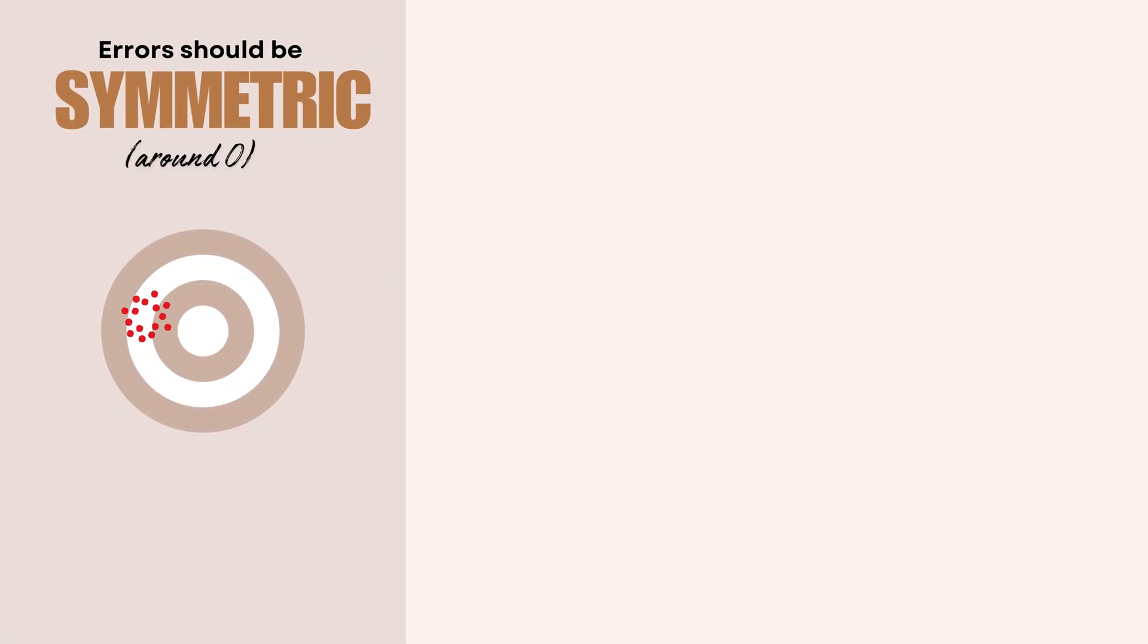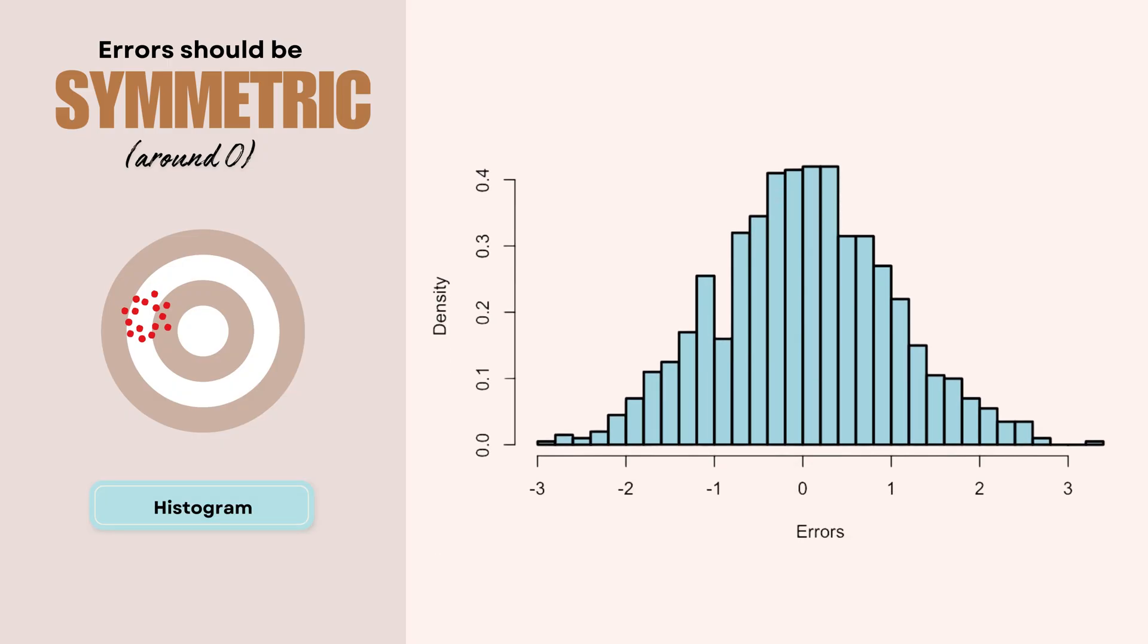The second thing is that our errors need to be symmetric. So are we equally likely to overpredict as we are to underpredict? Do the positive and negative errors balance out? And is the average error close to zero? And for this, we can use a simple histogram of plotting the errors. So the histogram tells us the distribution of our errors. The horizontal axis shows error values. Negative values means that we predicted too low. And positive values means that we predicted too high. Zero means a perfect prediction. The vertical axis shows how often each error value occurs. And the blue curve, that's the ideal normal distribution that we're aiming for.